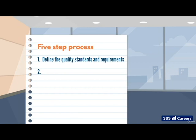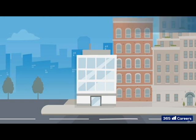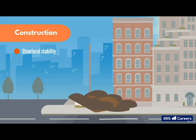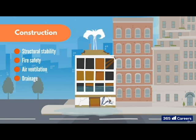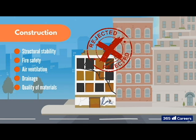The second part of the process focuses on setting the actual and actionable targets for the criteria identified during step one. In the construction field, most quality standards are set by regulation and require special expertise to be properly managed — things like structural stability, fire safety, air ventilation, drainage, electrical safety, quality of materials, and more. Without these regulations met, the project is unlikely to get the required authorization documents.